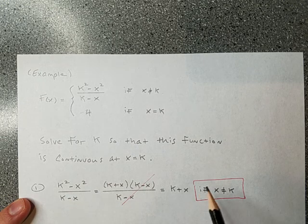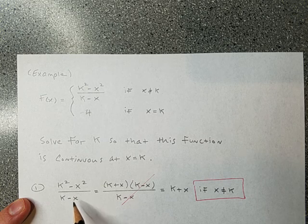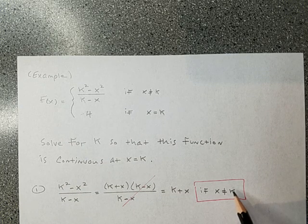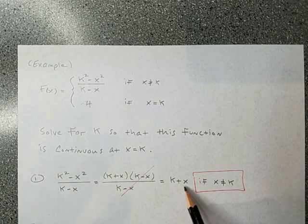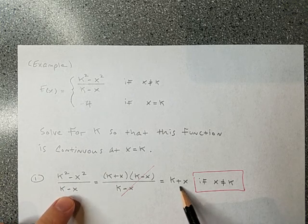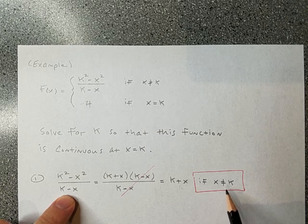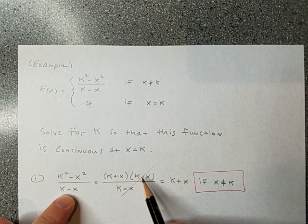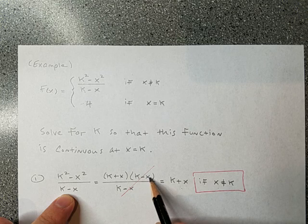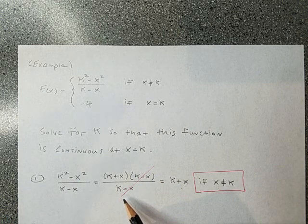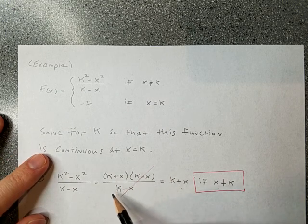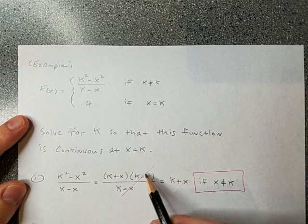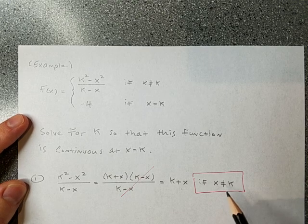Let's reduce that expression. I can factor and cancel to see it equals k plus x, with the exception that x is not k. Why the exception? If x equals k, then k minus k is zero — this is undefined when x equals k. You can plug k into k plus x and get 2k, a number — but these two things won't agree when x equals k. Plus, when canceling: if x and k were the same number, you'd be crossing out zero over zero, which you can't do.